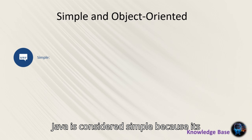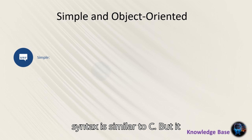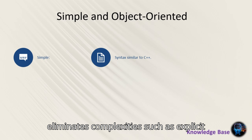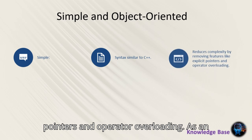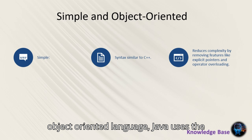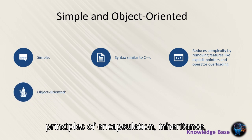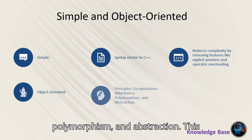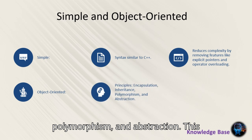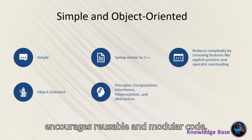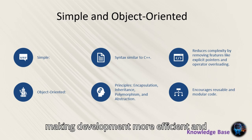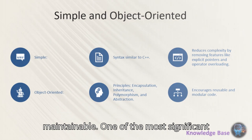Java is considered simple because its syntax is similar to C++, but it eliminates complexities such as explicit pointers and operator overloading. As an object-oriented language, Java uses the principles of encapsulation, inheritance, polymorphism, and abstraction. This encourages reusable and modular code, making development more efficient and maintainable.